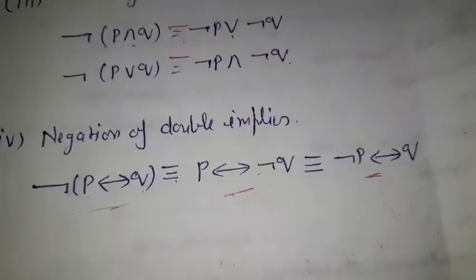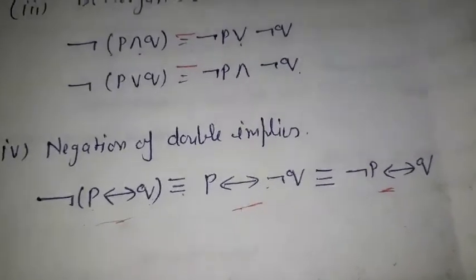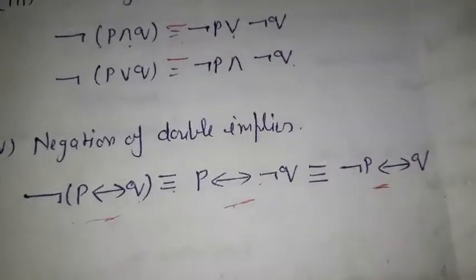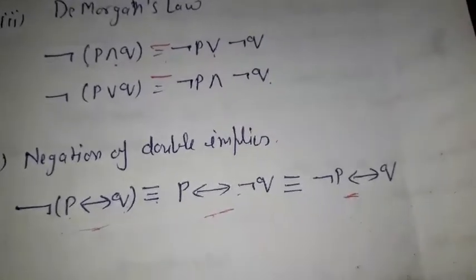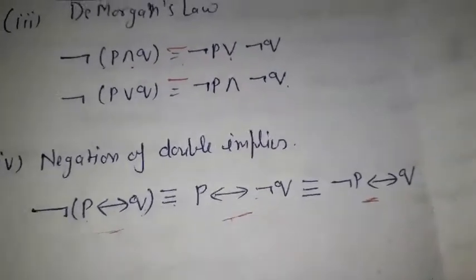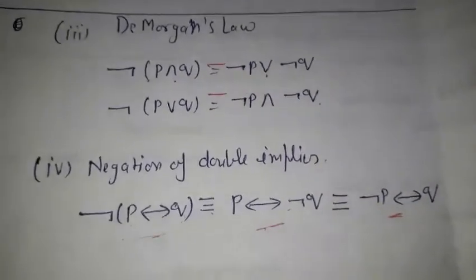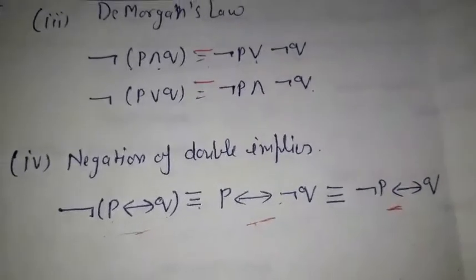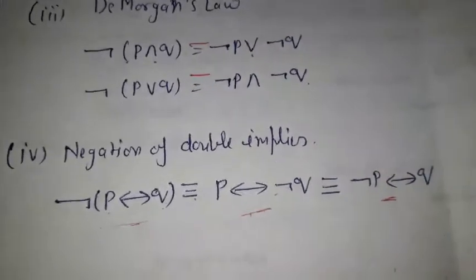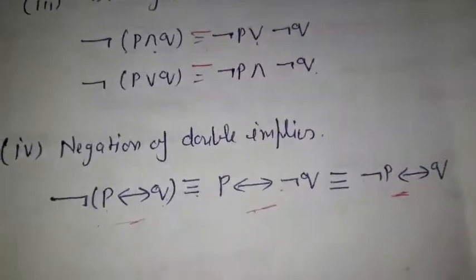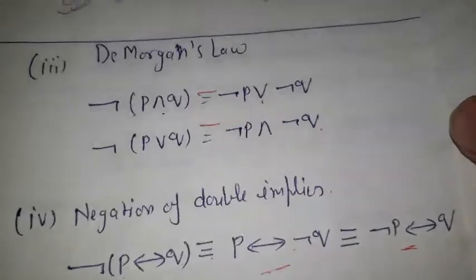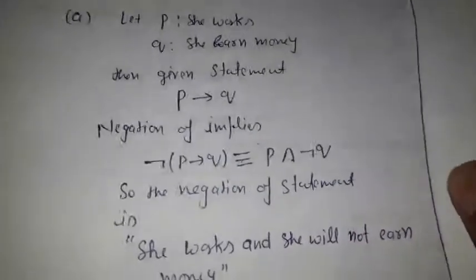First we represent the statement in symbolic form, then convert it back to natural language. Always note that when writing the statement in language form, minor grammatical errors are acceptable — the key is to write it in as simple language as possible.